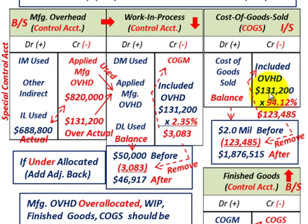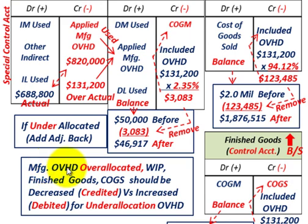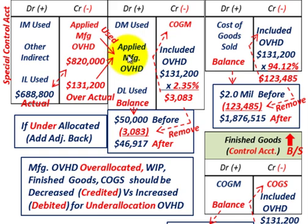So that's how we track this over-allocated overhead through T-accounts and make our adjustments. In this case, we had to credit or reduce all our accounts. Cost of goods sold sits on the income statement; the other accounts are on the balance sheet. The general rule: if overhead is over-allocated, work in process, finished goods, and cost of goods sold should be decreased or credited, because they came in with a debit for that over-allocated overhead amount, so we remove it by crediting each account.